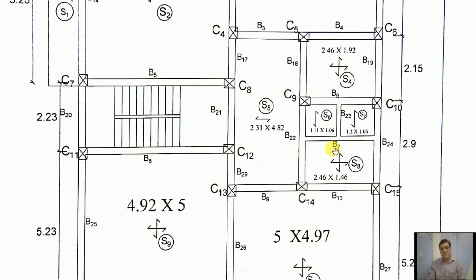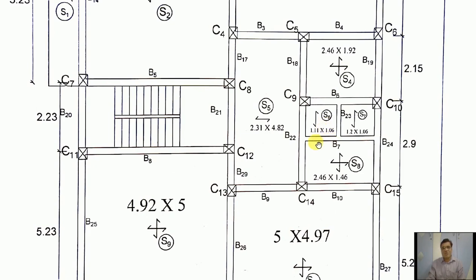Let us discuss beam B7 and its loads. Slabs S6, S7, and S8 are sunk slabs, sunk by 400 mm. So the depth of the beam is considered as 500 mm. Slab S6 is a one-way slab, S7 is a one-way slab, S8 is a two-way slab, and S5 is also a one-way slab. Slab S6 transfers load on the left portion of B7, and slab S7 transfers load on the right portion of B7 along with load transfer from slab S8.